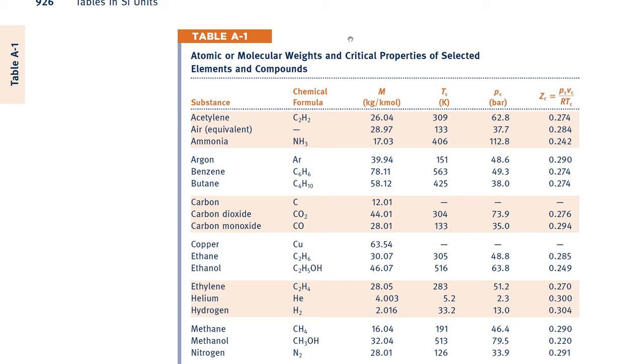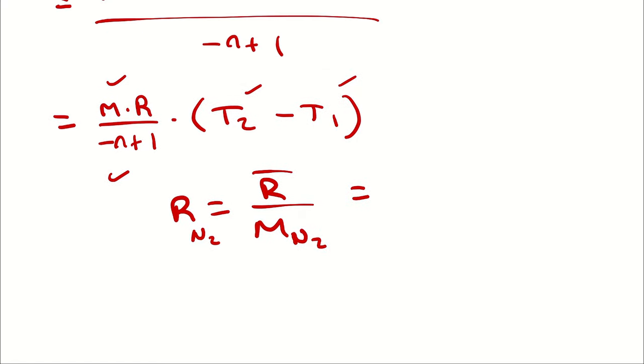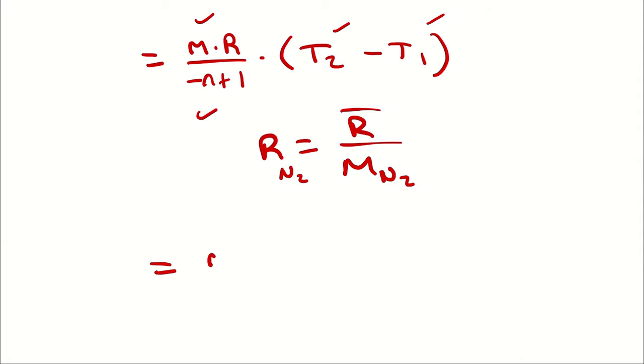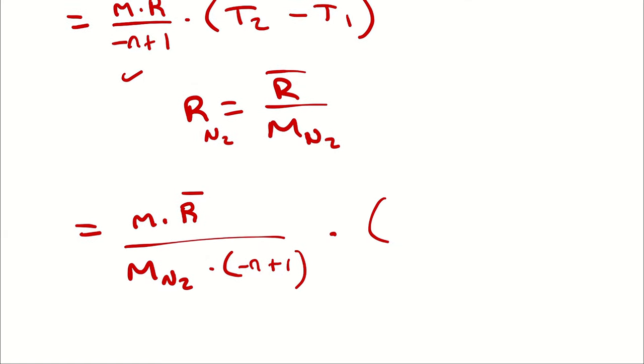So, I could take 8.314 divided by 28.01, recognizing that kilojoules per kilomole Kelvin divided by kilograms per kilomole are going to simplify down to kilojoules per kilogram Kelvin and then plug that into my equation. But, you know that I like to avoid doing any more calculations than I actually have to. So I will actually write this as mass times universal gas constant divided by molar mass of N2 times negative N plus 1. And yes, I know, I could write that as 1 minus N and write one fewer thing, but negative N plus 1 is just so much easier to commit to memory. And then I have T2 minus T1.